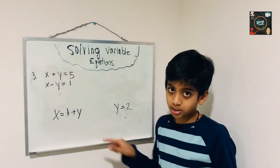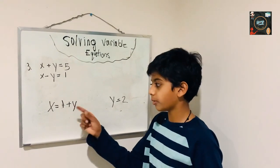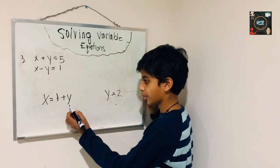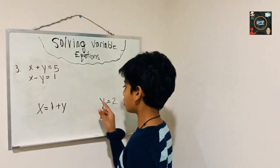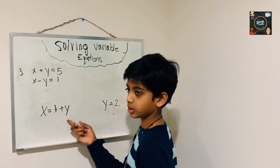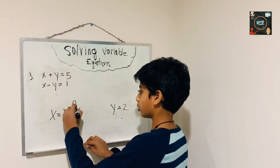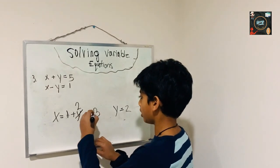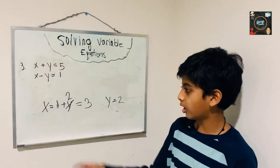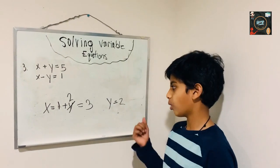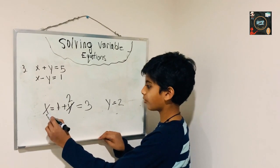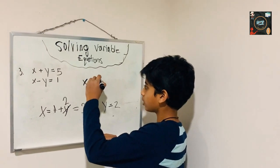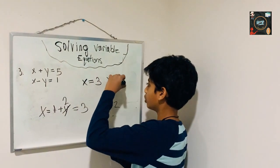But don't think this is the final answer — we still have to make this a whole number. Since we got the value for y and we have y here, we can substitute that value in. So 1 plus 2 is equal to 3. Now we have the final values for both x and y: x is equal to 3 and y is equal to 2.